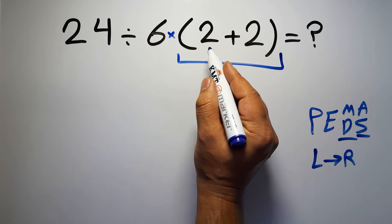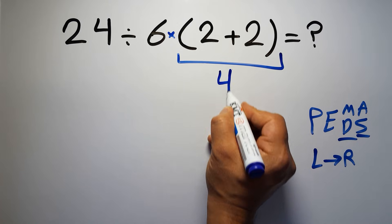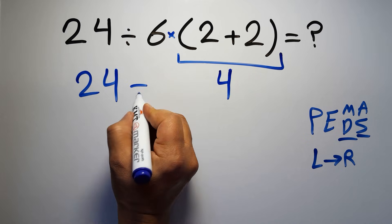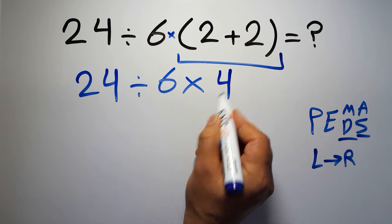Inside this parentheses we have 2 plus 2, which equals 4. So 24 divided by 6, then times 4.